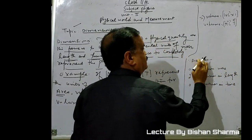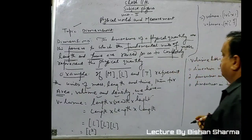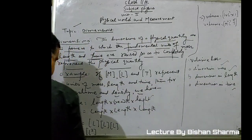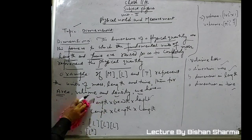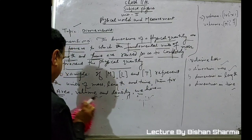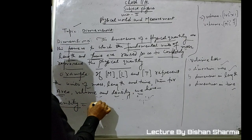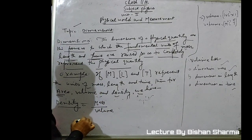Therefore, volume has zero dimension in mass, three dimensions in length, and zero dimension in time. Similarly, we will now explain density.